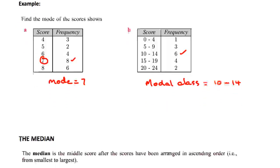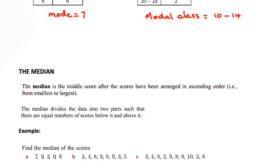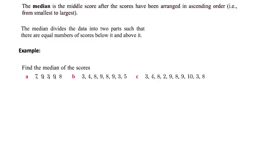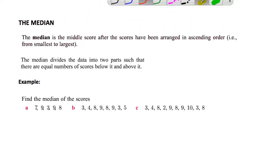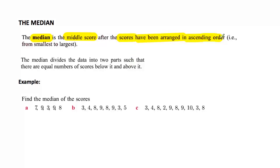Now we'll have a look at the third measure of central tendency, which we call the median. The median is actually the middle score, but the scores have to be arranged in ascending order — that is, from the smallest to the largest score. The median divides the data into two separate parts: the lower half and the upper half. Half the scores are below and half the scores are above it.